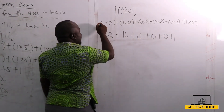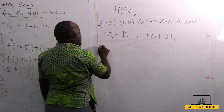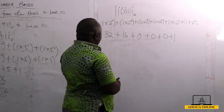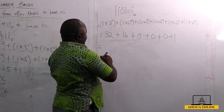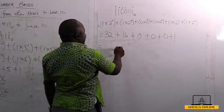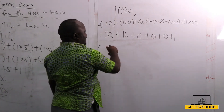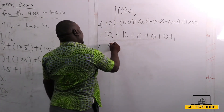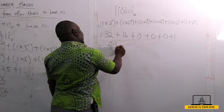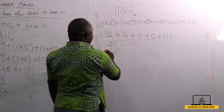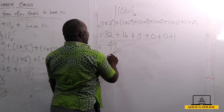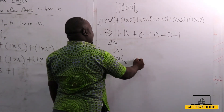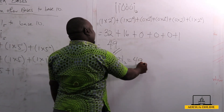So this gives us 32 plus 16, which equals 48, plus 1, which is 49. Therefore, 110001 in base 2 is equal to 49 in base 10.